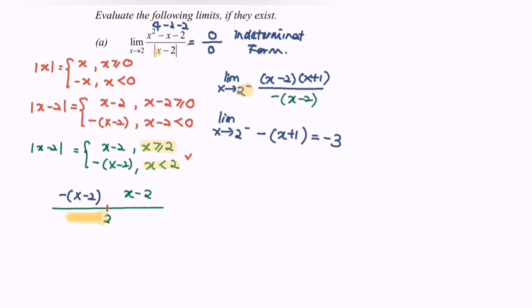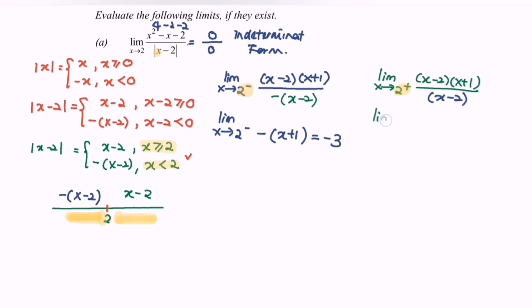Now I'm going to try the right-hand side. So limit when x approaching 2 from the right. I'm going to factorize the numerator, giving (x minus 2)(x plus 1). Since the situation is approaching 2 from the right, based on the diagram, the function for the denominator is x minus 2. After simplifying, the limit as x approaches 2 from the right gives x plus 1. Substituting the value 2, the value of y will be approaching 3.